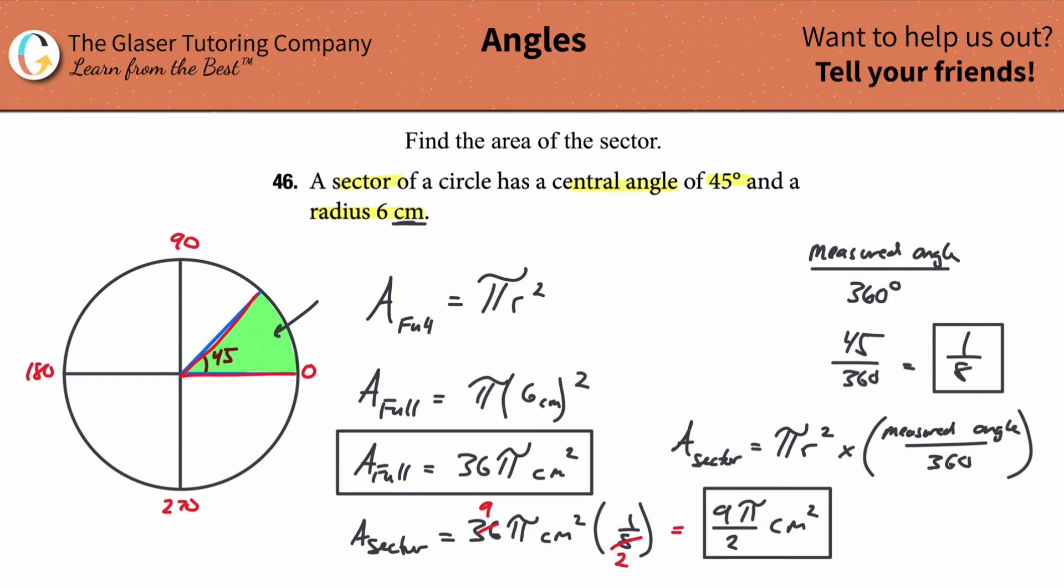If you wanted the actual decimal answer now, just take nine, multiply it by 3.14, and then divide it by two. So it's about 14.1. So 14.1 squared centimeters. And that's it. Either answer is fine. This is the more exact value, but that's how you do it.